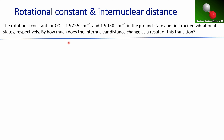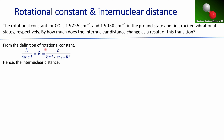The question is: if there's a transition between those two vibrational states, what is going to be the change in the internuclear distance in this molecule? From the definition of the rotational constant, we can see that it includes the effective mass of the molecule and also the internuclear distance.